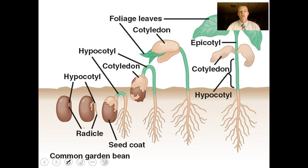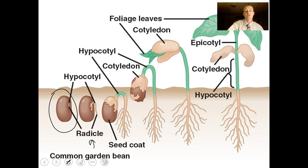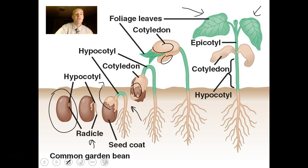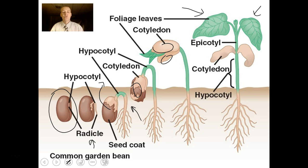This shows the sequence of a dicot seed germinating: the radicle comes out first, then this part gets pulled up out of the soil. You can see the cotyledons — the stored nutrients that fuel the plant — giving it starch until it undergoes photosynthesis. Then the full-blown leaves come out. I'd suggest growing some seeds yourself — take bean seeds, put them in a plastic bag with a paper towel and some water, and watch the plant unfold.